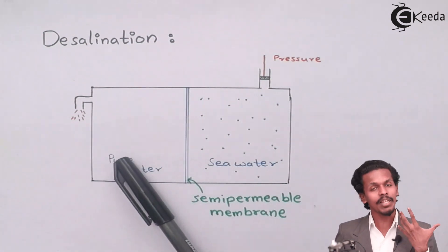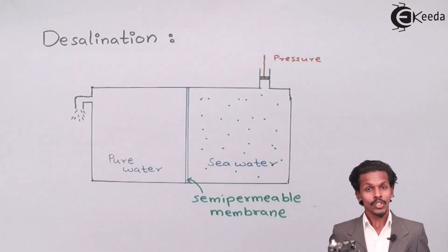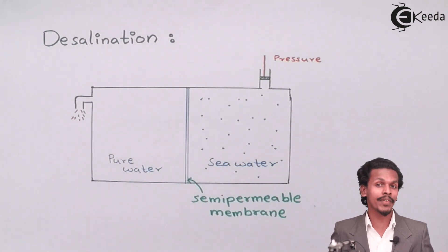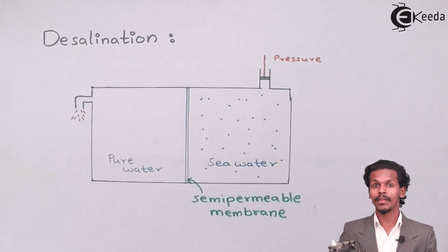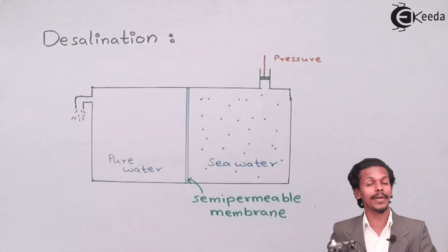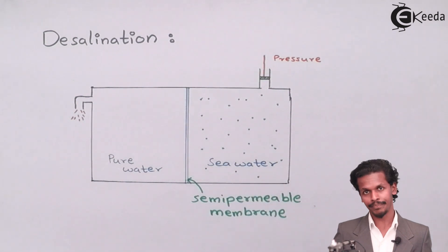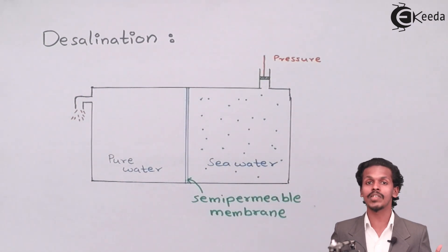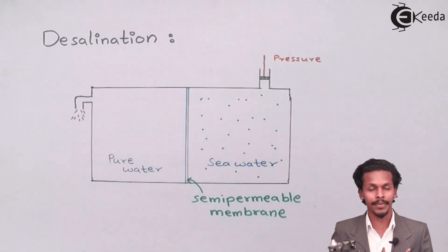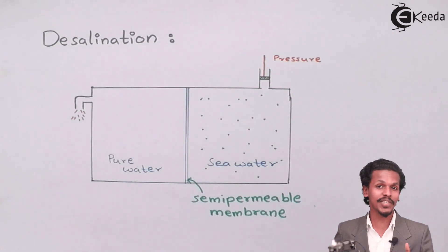As osmosis is a natural phenomenon, the pure water on the left, having very low concentration, will naturally flow towards the high-concentration sea water — that is osmosis. To prevent this osmosis, we apply extra pressure so that the solvent does not flow from low to high concentration. Osmotic pressure is what prevents this. But now we need to apply even more pressure, because the sea water contains water that could be consumed — the only problem being its high concentration of salt, which is not suitable for human consumption.